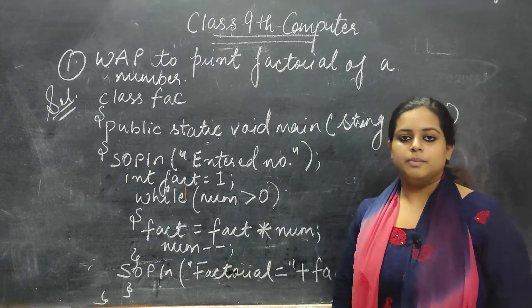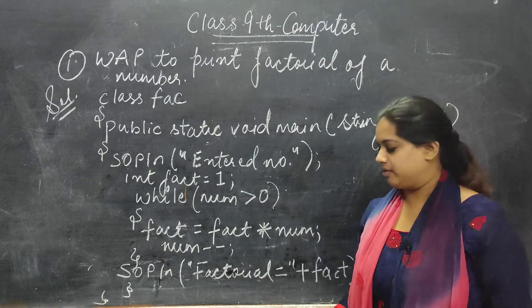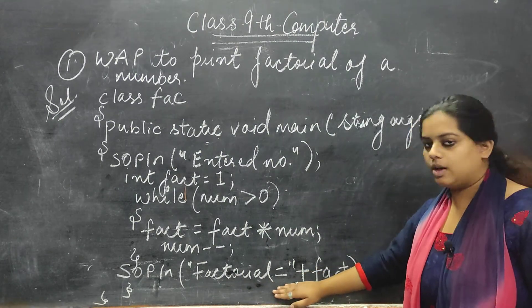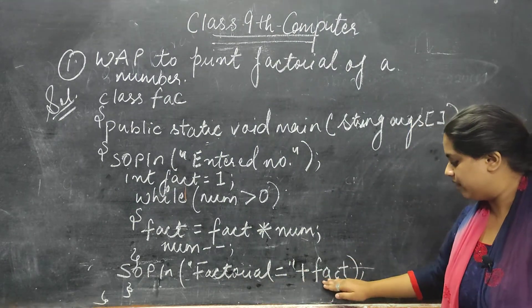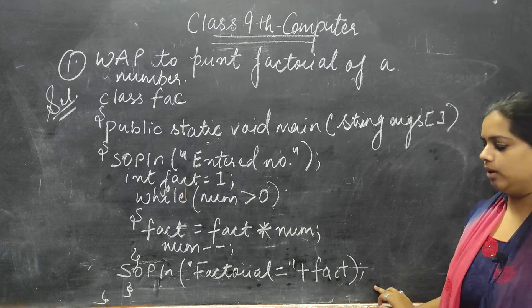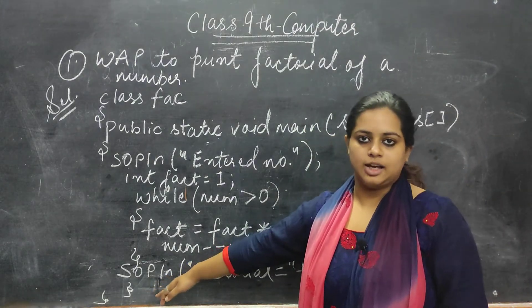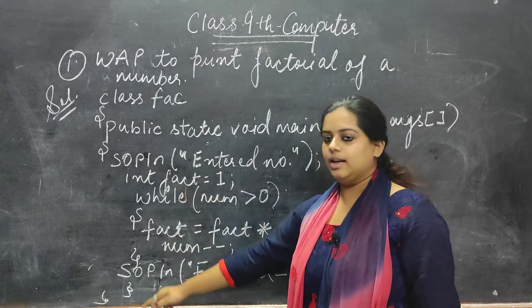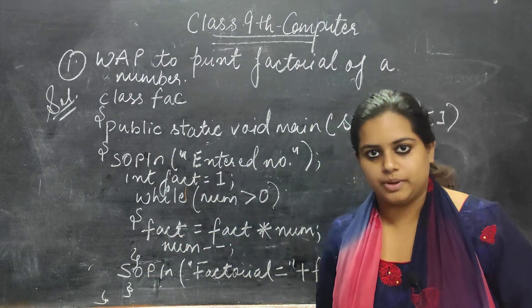And the final print which you will be getting will be of the factorial of a number or factorial is equal to double quotes plus FACT followed by a colon. And over here, two braces I have closed as I have opened two braces here. So at the end I will be closing with the two braces.